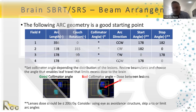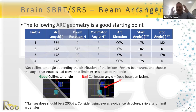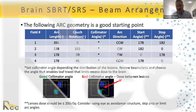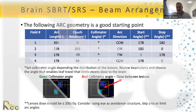The standard beam arrangement for brain SRS and SBRT typically uses four arcs. One is a coplanar arc with couch at zero — sometimes a full arc, sometimes partial depending on the lesion location. The other three are partial arcs with couch rotations of 90°, 315°, and 45°, spreading the beams in all directions. This is a starting point that must be customized for each patient's lesion locations.